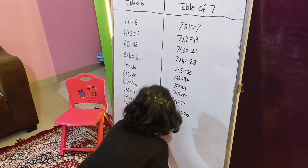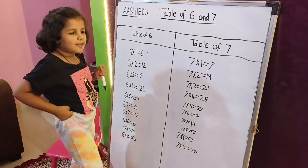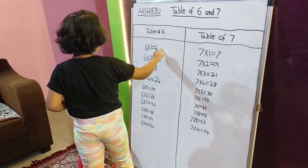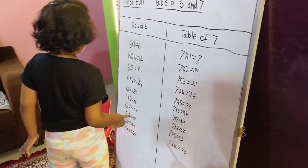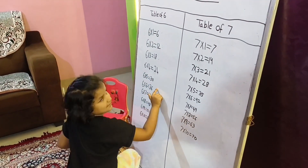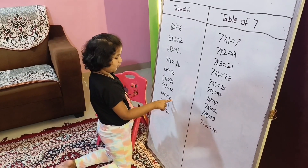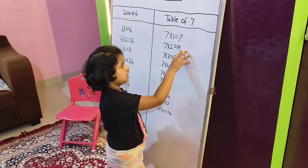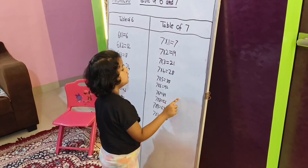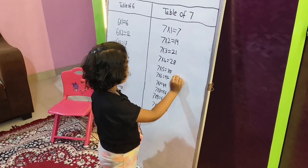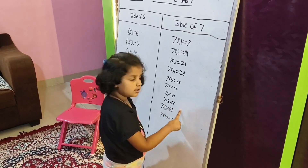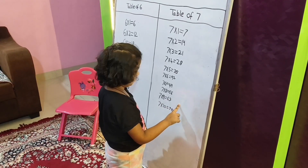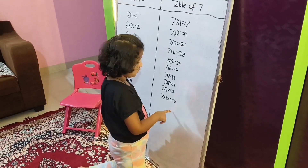Tell me again please — table of 6 and table of 7. Ok, now I will tell. 7 × 1 = 7, 7 × 2 = 14, 7 × 3 = 21, 7 × 4 = 28, 7 × 5 = 35, 7 × 6 = 42, 7 × 7 = 49, 7 × 8 = 56, 7 × 9 = 63, 7 × 10 = 70.